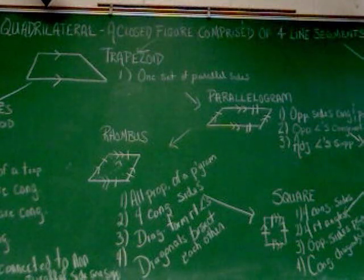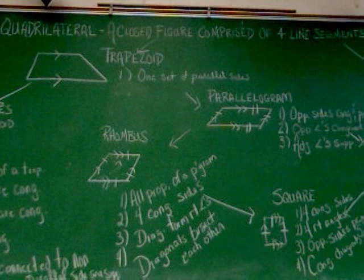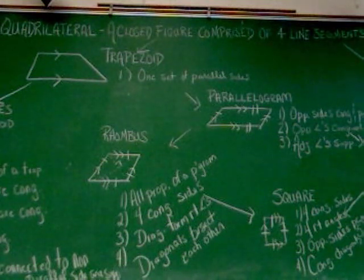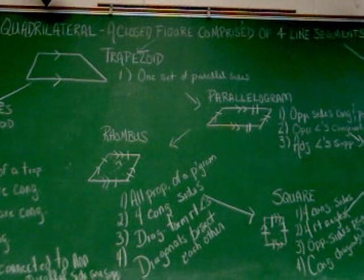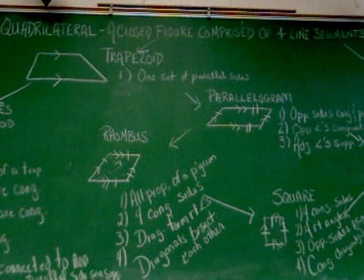The quadrilateral image map shows you how all the different shapes are related. It also lists some, but not all, of their major properties. What you would primarily have to do with these properties is be able to identify them and relate them to the shapes.